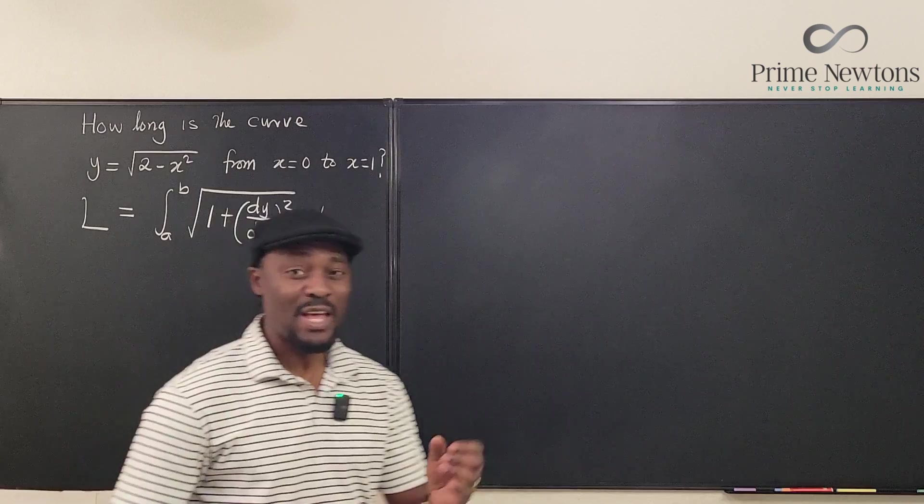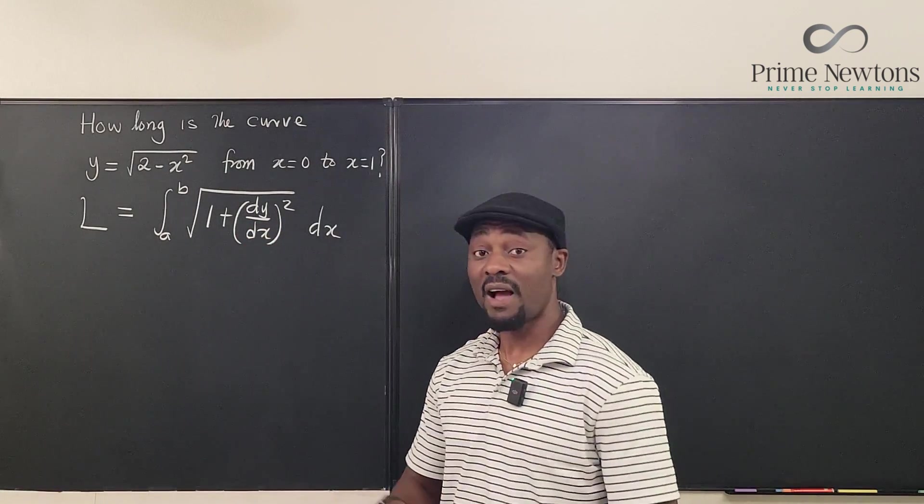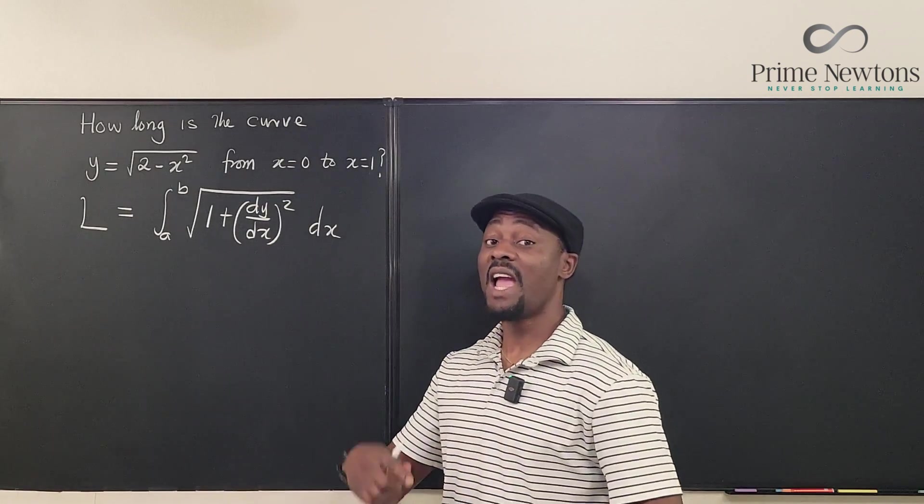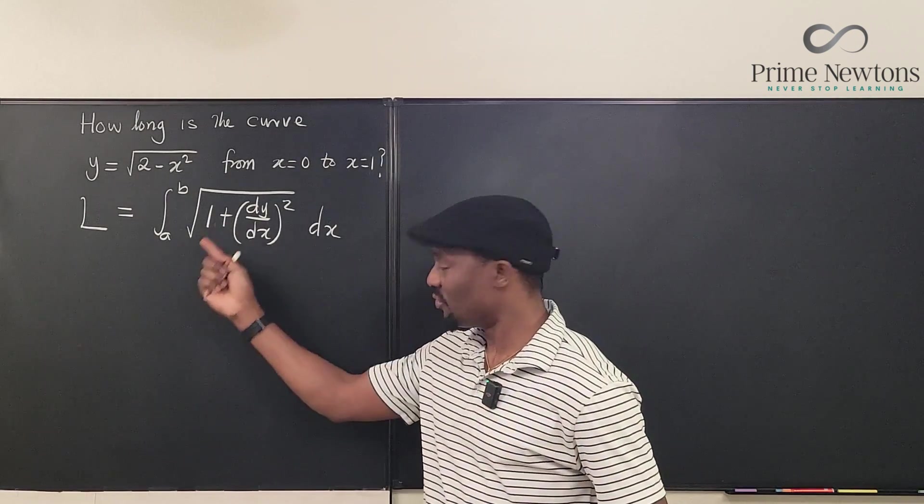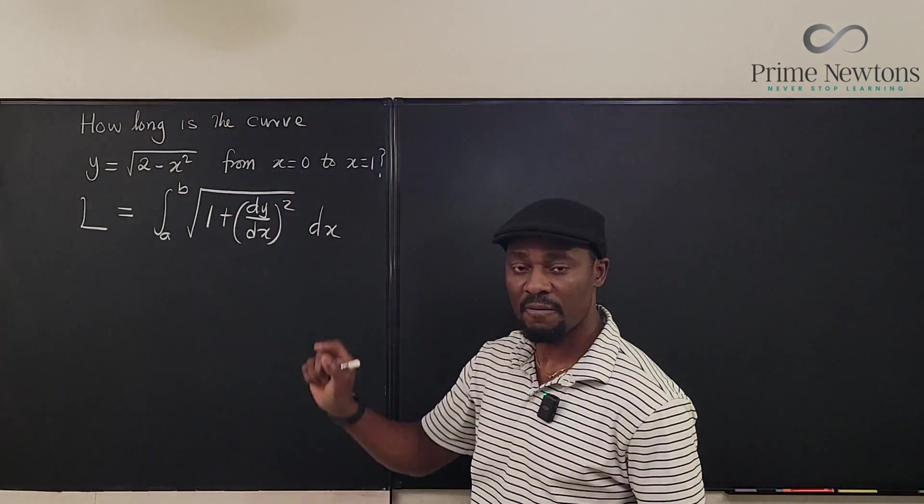So this is the formula you're going to use. The only thing you need to know is dy/dx. After knowing dy/dx, come plug it in, simplify, and take the definite integral from the two boundaries which are from 0 to 1.